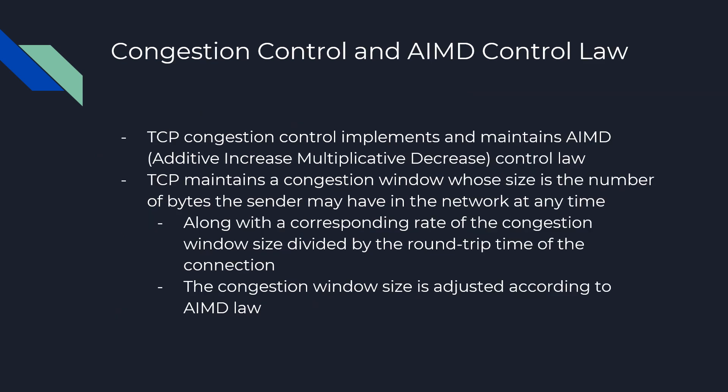Now we'll talk about congestion control and AIMD control law. TCP congestion control implements and maintains AIMD, also known as additive increase multiplicative decrease control law. TCP maintains a congestion window whose size is the number of bytes the sender may have in the network at any time, with a corresponding rate of the congestion window size divided by the round trip time of the connection. All of this is adjusted according to AIMD law, which controls that congestion window size.